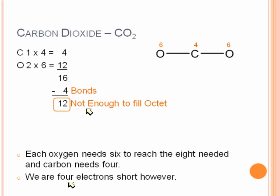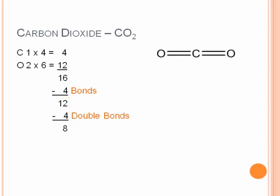We're four electrons short. So that's going to imply either one triple bond or two double bonds. Because of the symmetry of the molecule, we're going to use two double bonds. Doubling the bonds between the carbon and the oxygen takes away four more electrons, leaving us with a total of eight.